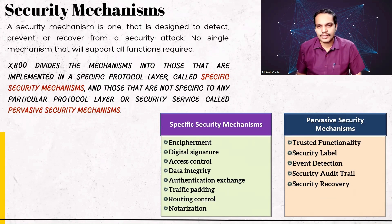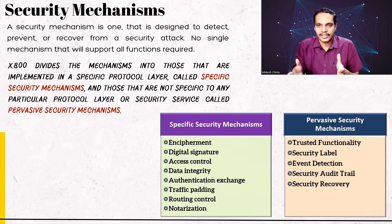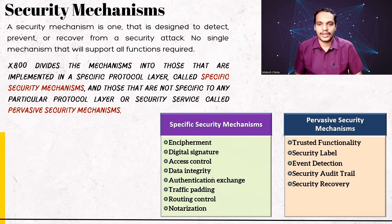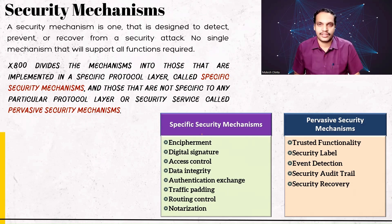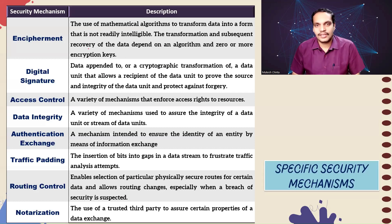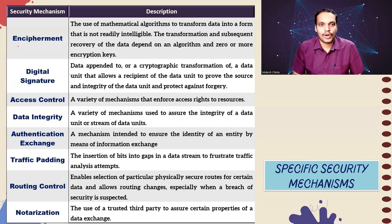Here is the list of both the specific and pervasive mechanisms — we will discuss each one in detail. This is the general categorization done by X.800. Let's discuss each one in detail and then see how these mechanisms fit in to provide the security services we discussed earlier. The first specific security mechanism is called encipherment, also known as encryption.